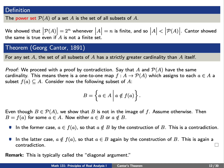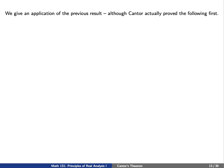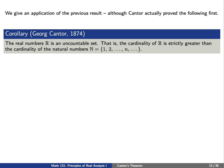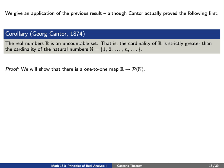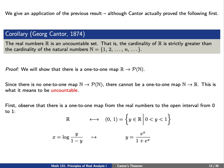Let's give an application of this result — although historically, Cantor actually proved this before he proved the previous statement. We claim that the collection of all real numbers is an uncountable set. That is, the cardinality of the real numbers is strictly greater than the cardinality of the natural numbers. We're going to prove that there is a one-to-one map between the real numbers and the power set of the natural numbers. Since there is no one-to-one map from the natural numbers to the power set of the natural numbers, there cannot be a one-to-one map from the natural numbers to the real numbers. But this is, by definition, what it means to be uncountable.